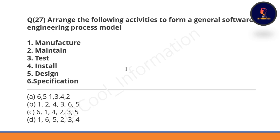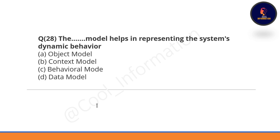Question 27: Arrange the following activities to form a general software engineering process model — manufacture, maintain, test, install, design, and specification. First comes specification, then design, then manufacture, then test, then install, and then maintain. Option A is correct.